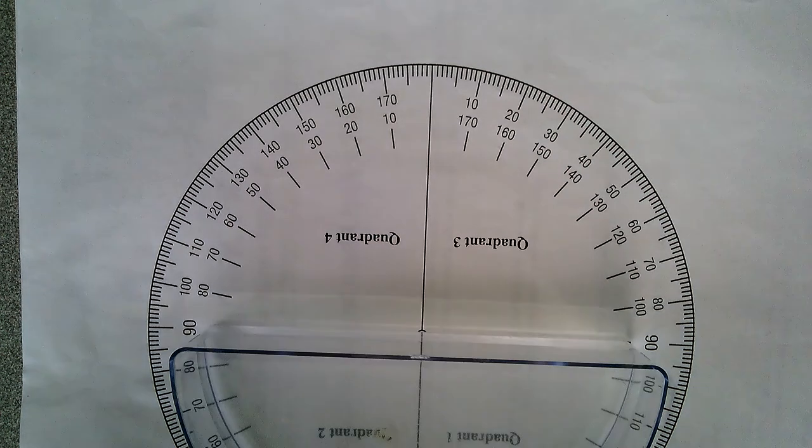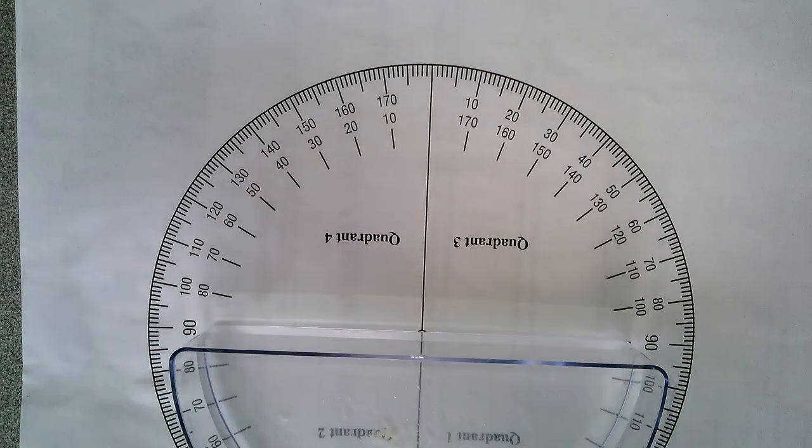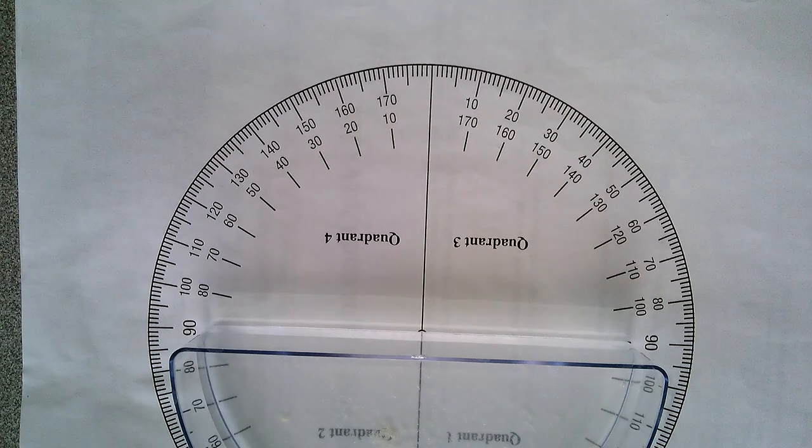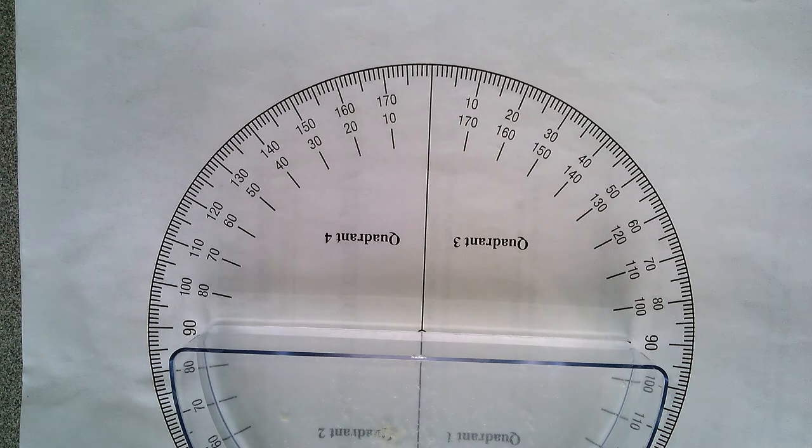So when you go from a more dense media to a less dense media, you're going to bend away from the normal. As you go from a less dense media to a more dense media, you're going to bend towards the normal. That's a big take-home for that, and then how we calculate that and stuff, we'll worry about in the next video.